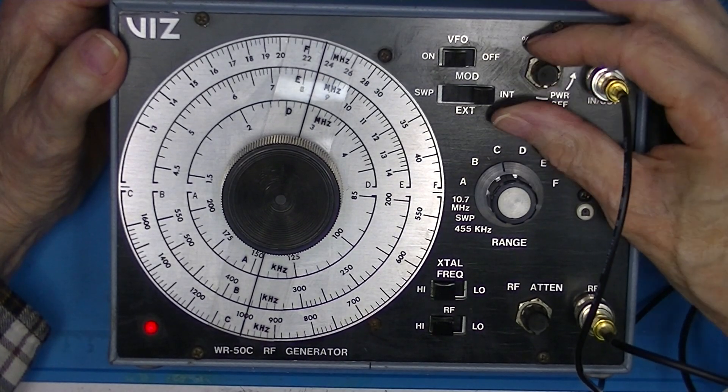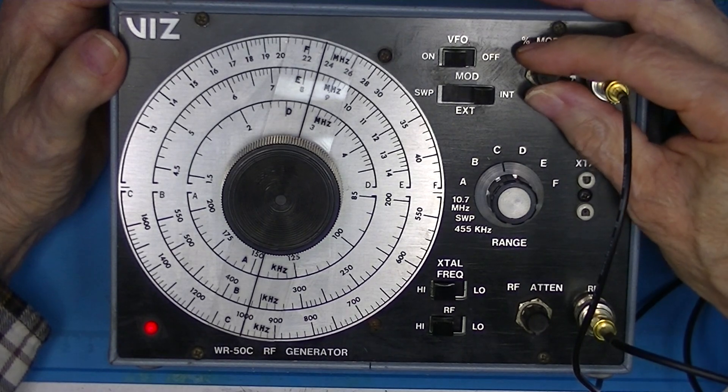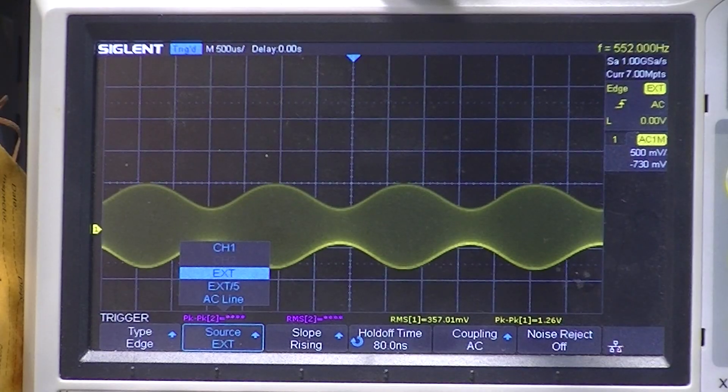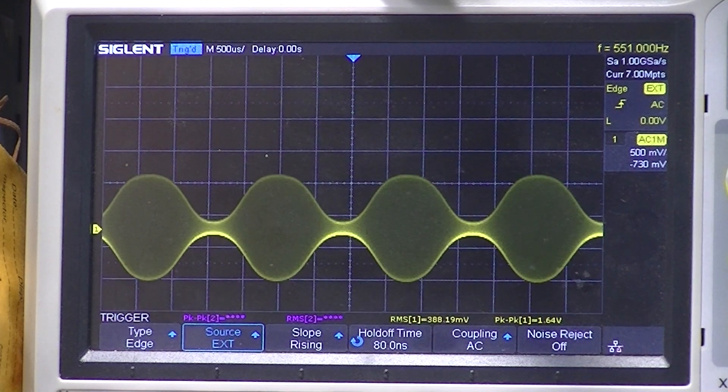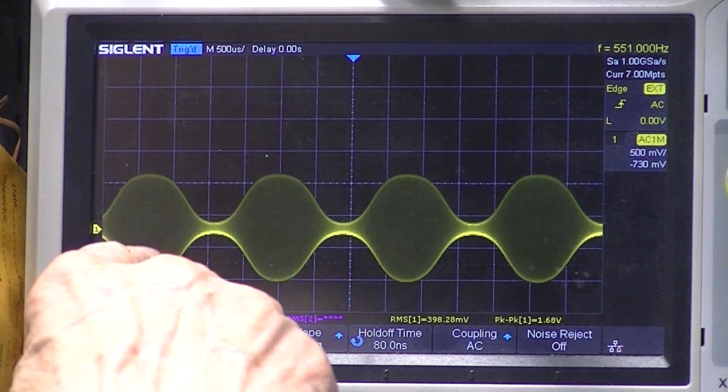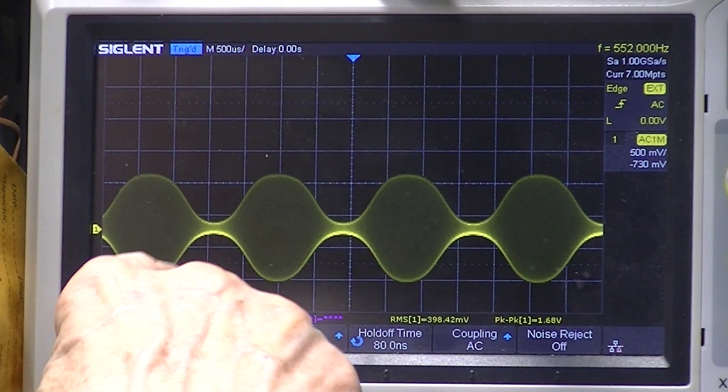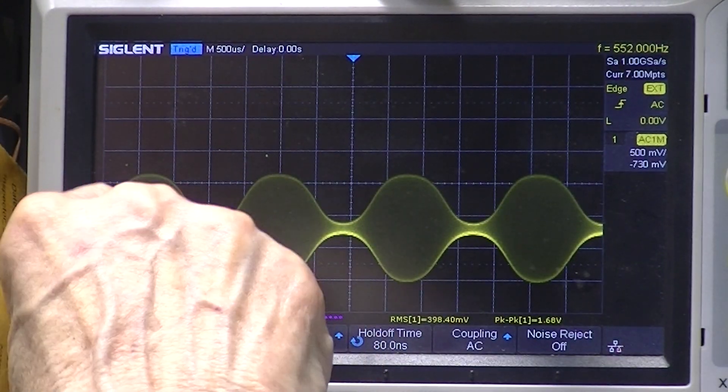I can vary the intensity of the audio output. And you see how the modulation envelope is developed. This outline, top and bottom, is the modulation envelope.